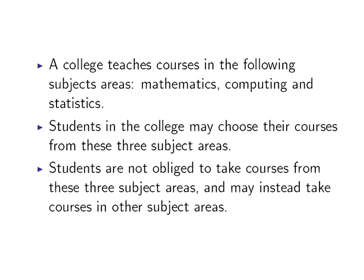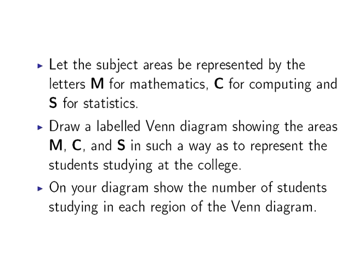Students are not obliged to take courses from any of these three subject areas and may indeed take courses in other subject areas. Let the subject areas be represented by the letters M for Mathematics, C for Computing, and S for Statistics. We need to draw a labeled Venn Diagram showing the areas M, C, and S in such a way that it would represent the students studying at the college.